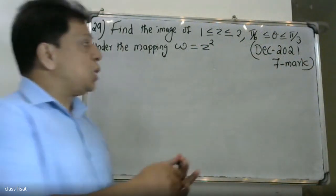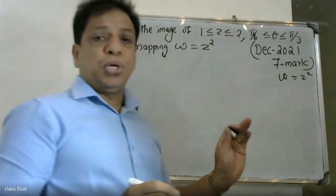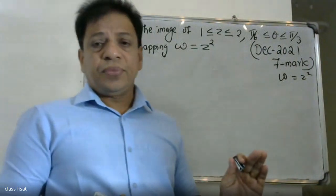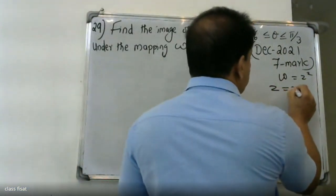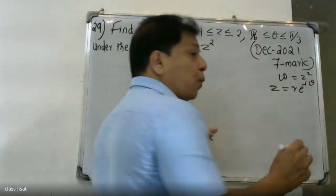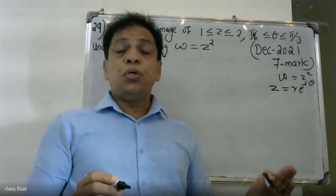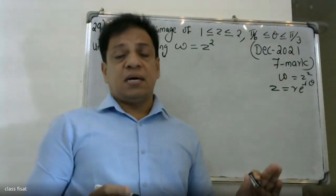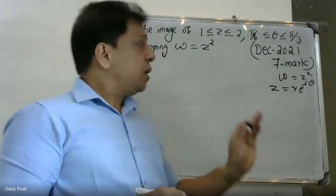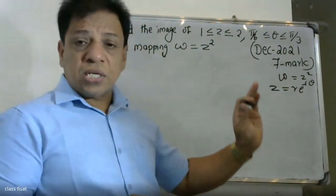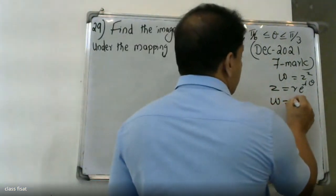We start with w = z². We write z in polar form as z = r·e^(iθ), which equals r(cos θ + i sin θ). This is the polar representation of the complex number z.